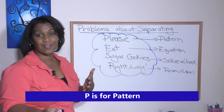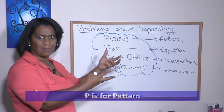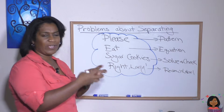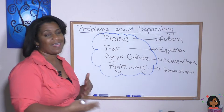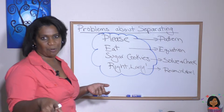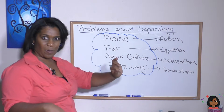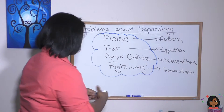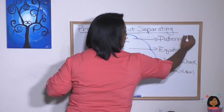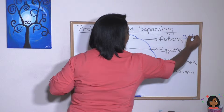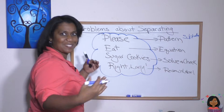P is for pattern. What's the pattern here? I had a certain amount of popcorn, we ate some, and now we have a certain amount left. That sounds like a subtraction pattern — beginning amount minus some went away, and now we have what remains. So there is a subtraction pattern.